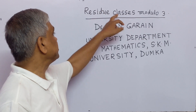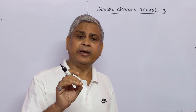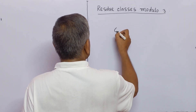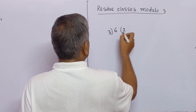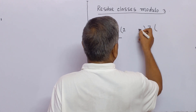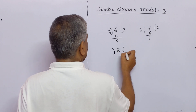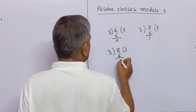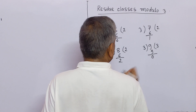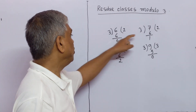I will give the concept of residue classes modulo 3. When any integer is divided by 3, we get remainder either 0, 1, or 2. For example, if we divide 6 by 3, remainder is 0. If we divide 7 by 3, we get remainder 1. If we divide 8 by 3, we get remainder 2. If we divide 9 by 3, we get remainder 0. In this way, if we divide any integer by 3, we get remainder either 0, 1, or 2.